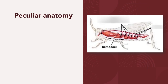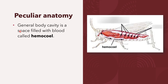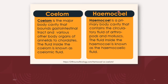One of the most important peculiar internal anatomy of the arthropod is exhibited in their body cavity. The general body cavity of the arthropod is a space filled with blood called the haemocoel. The haemocoel is a primary body cavity that contains the circulatory fluid of the arthropods, as well as the mollusks. The fluid inside the haemocoel is known as the haemocoelic fluid or the haemolymph.